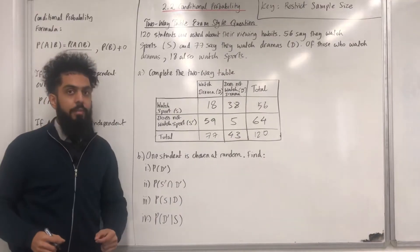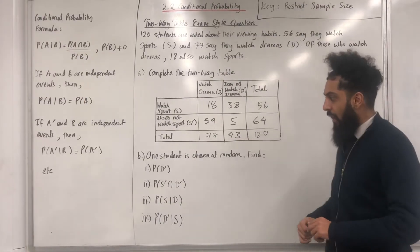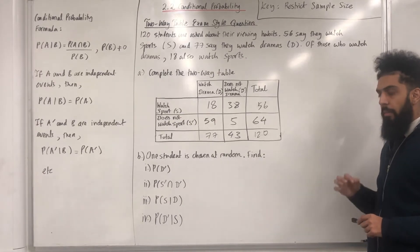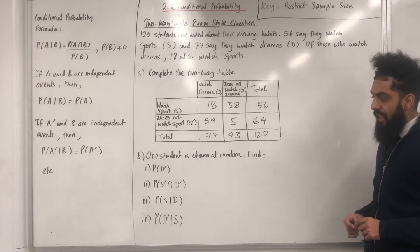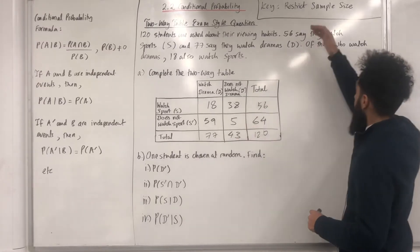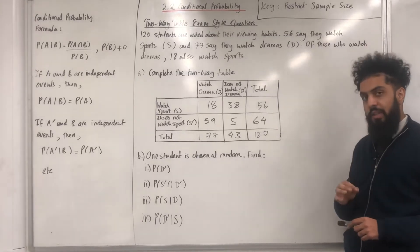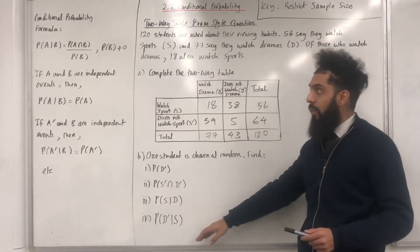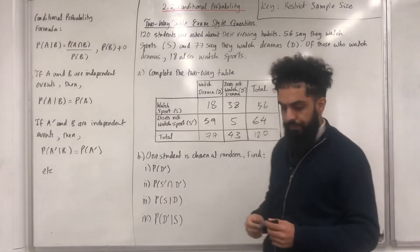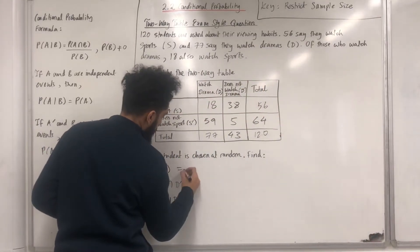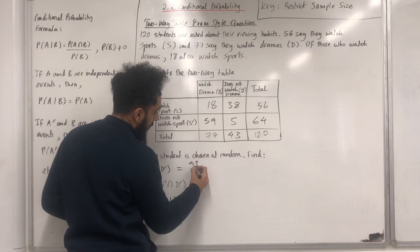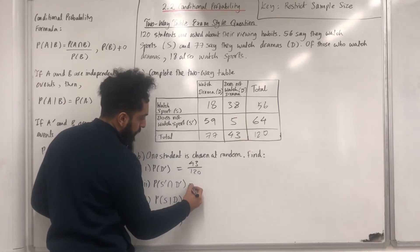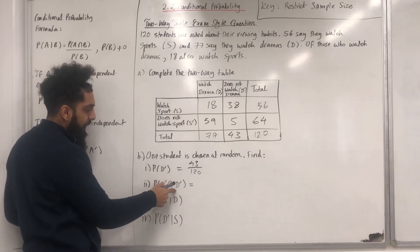Part B: one student is chosen at random. Find: part one — probability not D; part two — probability not S intersect not D; part three — probability S given D (conditional probability, restrict sample size); part four — probability not D given S (again conditional probability, restrict sample size). Starting with part one: probability not D is the probability of does not watch dramas. We have 43 out of a possible 120.